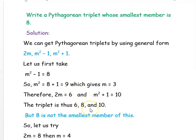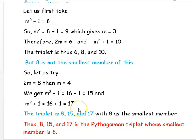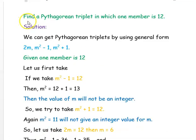We want 8 as the smallest number, so we try it the other way. We consider 2M = 8, giving M = 4. For M = 4: M²−1 = 16−1 = 15 and M²+1 = 16+1 = 17. Thus the three triplets are 2M = 8, M²−1 = 15, and M²+1 = 17. Here 8 is the smallest member, so 8, 15, and 17 is the required Pythagorean triplet.